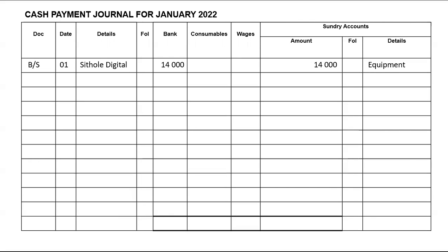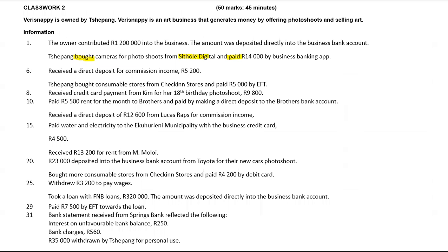This one goes to the cash payments journal because we are making a payment. The previous one went to the cash receipts journal because we were receiving cash. Here we are paying out money — when you pay out money, the transaction is recorded in the cash payments journal. On the sixth, it says we received a direct deposit for commission income, meaning we are receiving money, so that will be recorded in the CRJ.